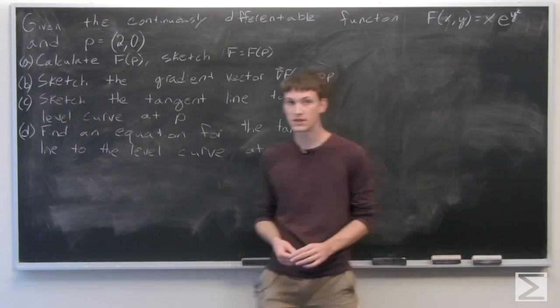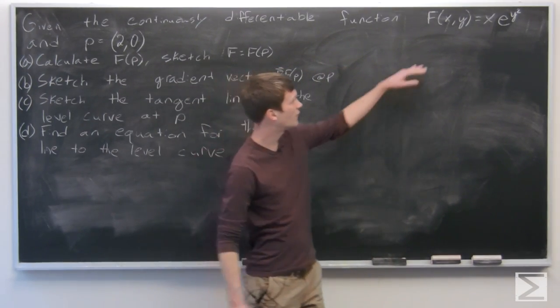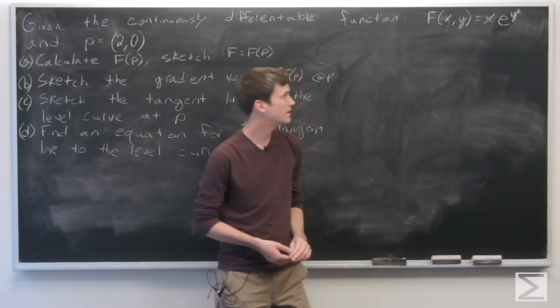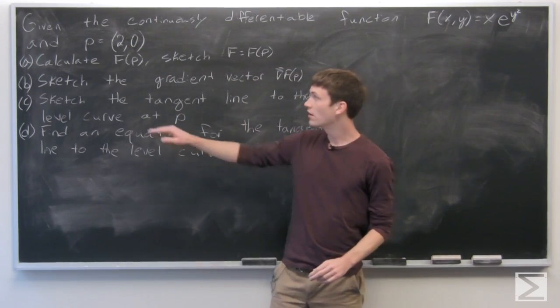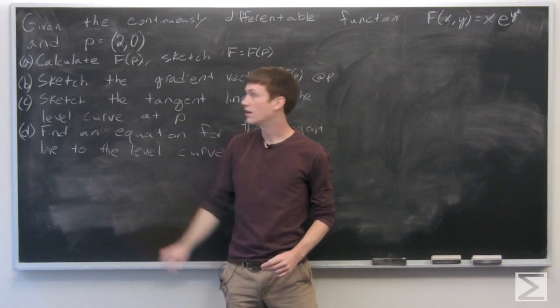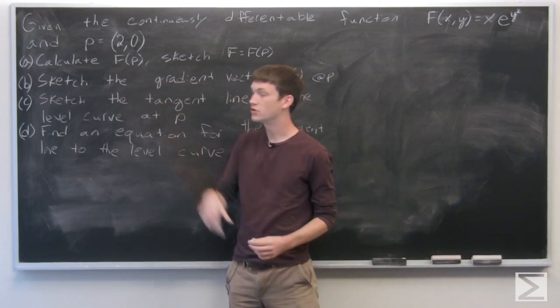In this problem, we're given a continuously differentiable function f(x,y) = xe^(y²), and p is a point at (2,0).